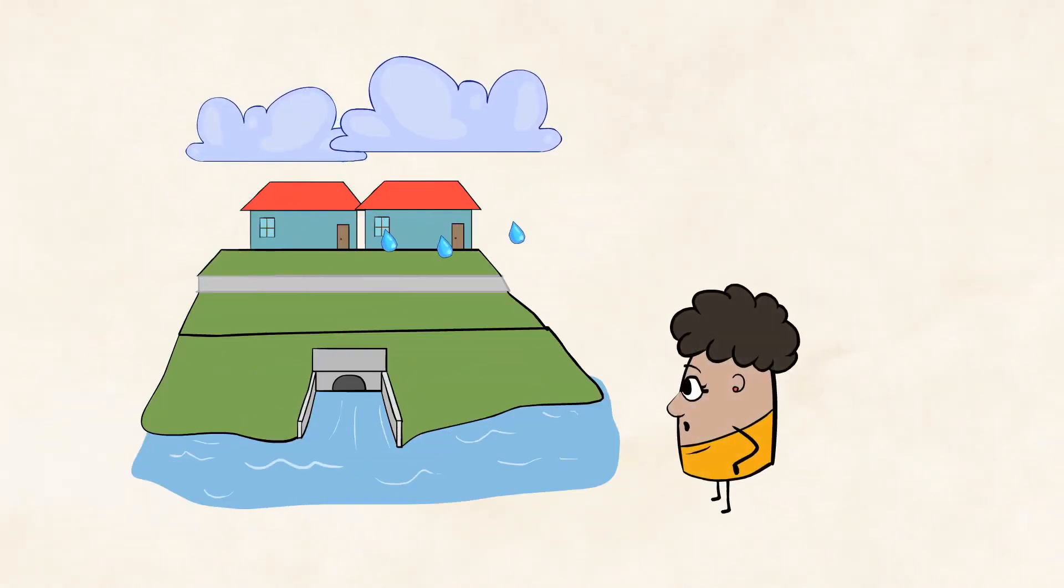This is why it's important for areas that get a lot of rain to have proper irrigation. Irrigation is the way that water flows. Sometimes in areas that are very rainy, people have to make sure that there are enough places for water to naturally flow so that the area does not experience flooding.